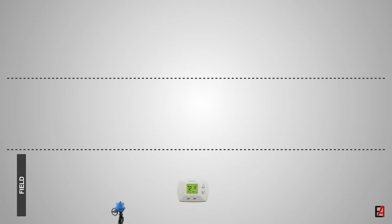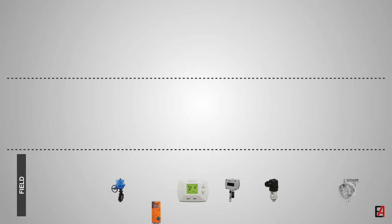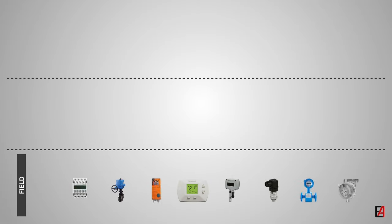The BMS system comprises three main levels. The first is the field level. This level refers to sensors, instruments, valves, actuators, thermostats, I/O modules, etc. This level plays an important role in the building management system, as the actions taken by the BMS system are purely based on the inputs received from this level.